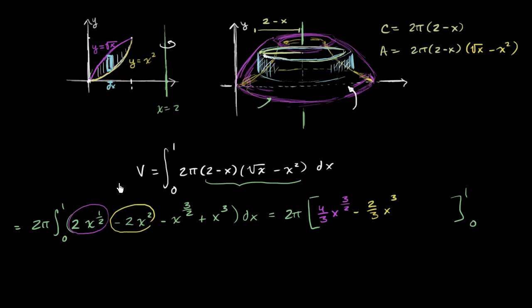And then right over here, if we increment to this, you get x to the 5/2. And so we're going to want to multiply by 2/5. So minus 2/5 x to the 5/2 power.